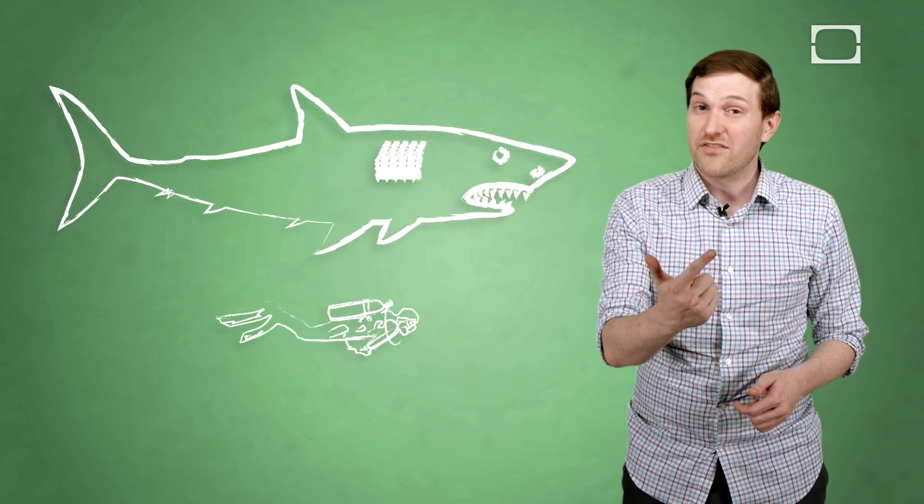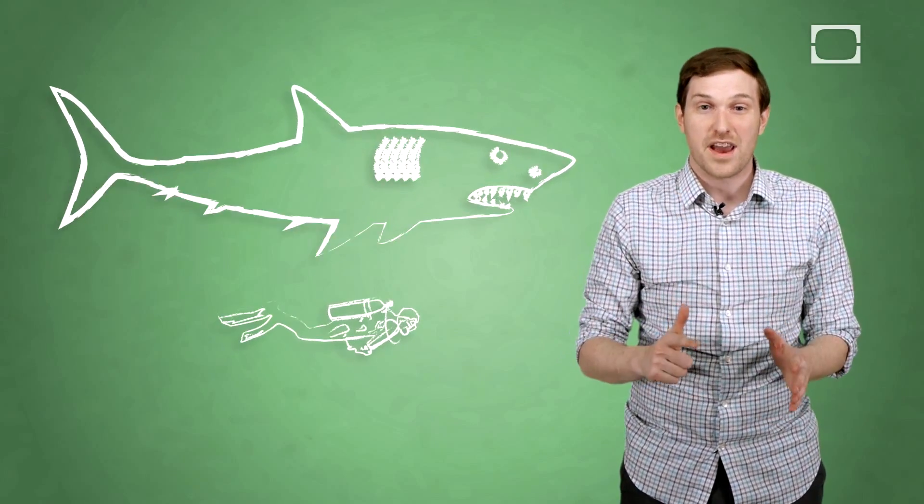Great whites, tiger sharks, bull sharks—those are the top three of sharks likely to attack you for the following reasons. One, they're widespread. Two, they're large enough that human beings can look like prey. Three, they're super powerful and the first bite can cause fatal damage.